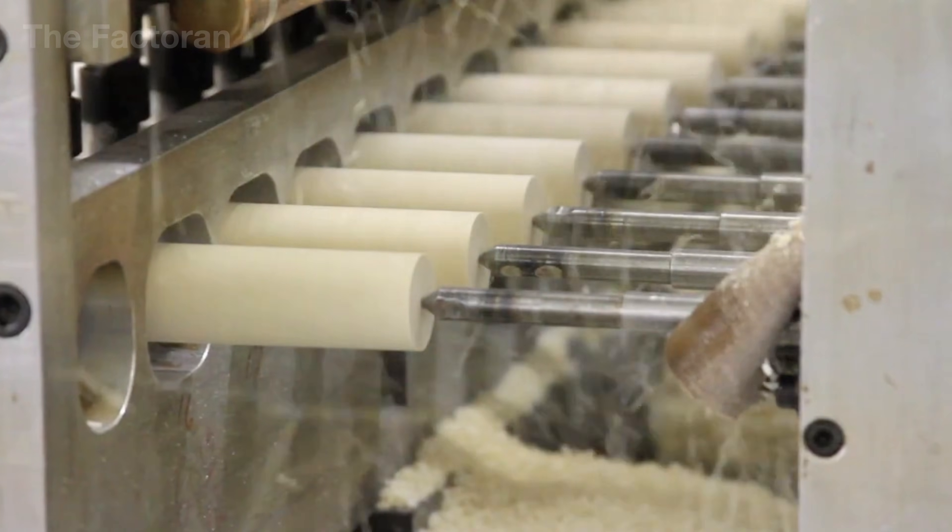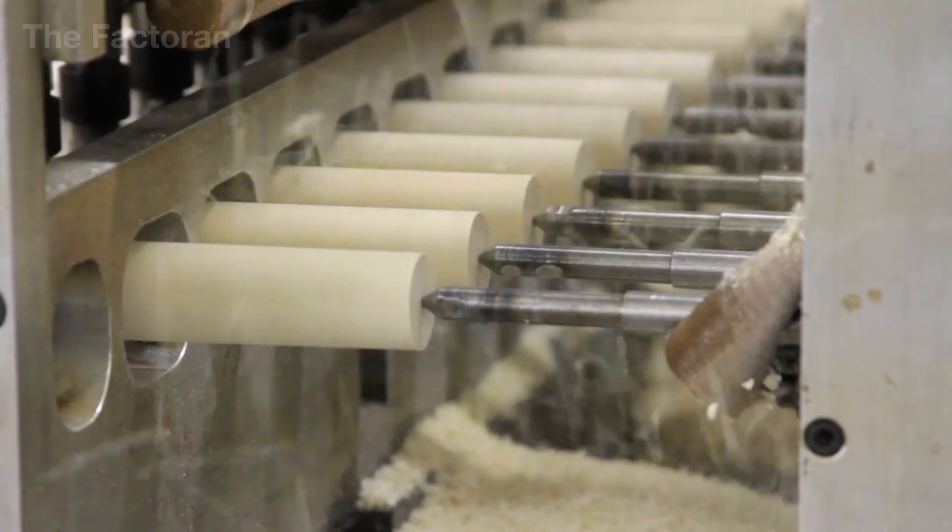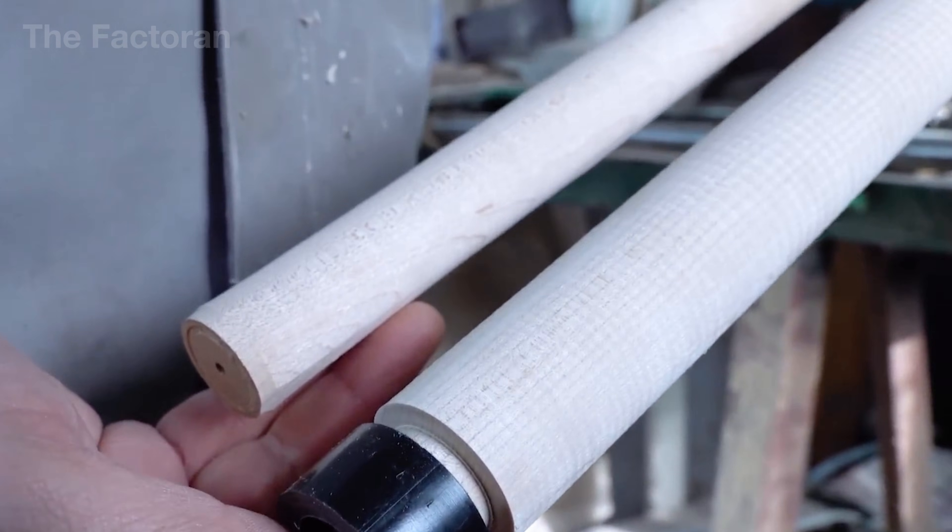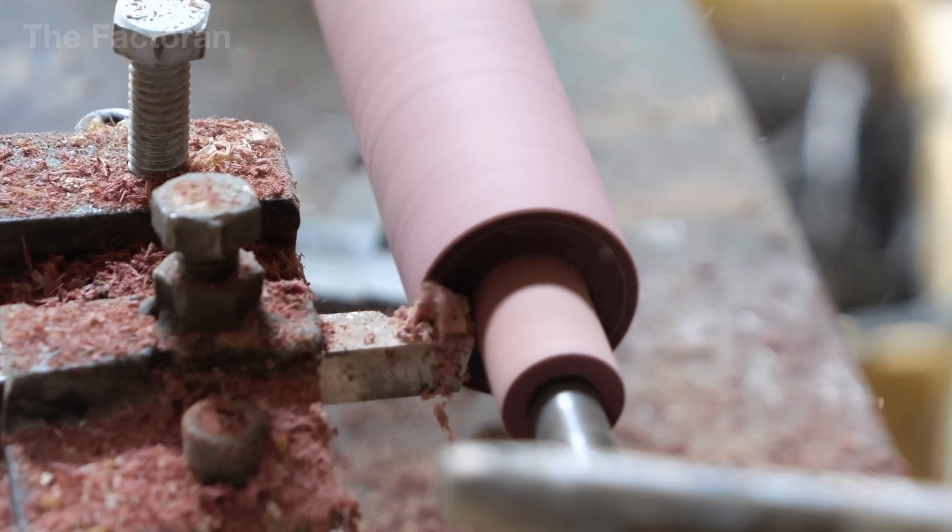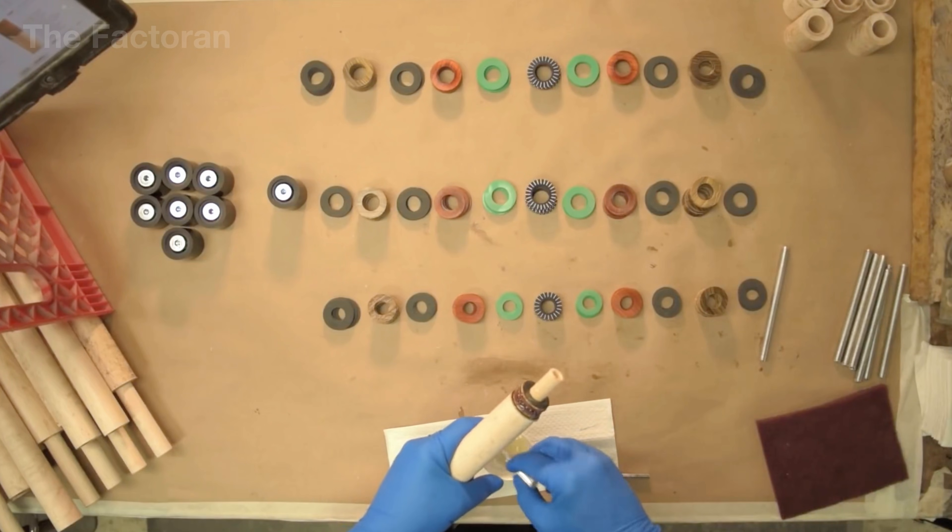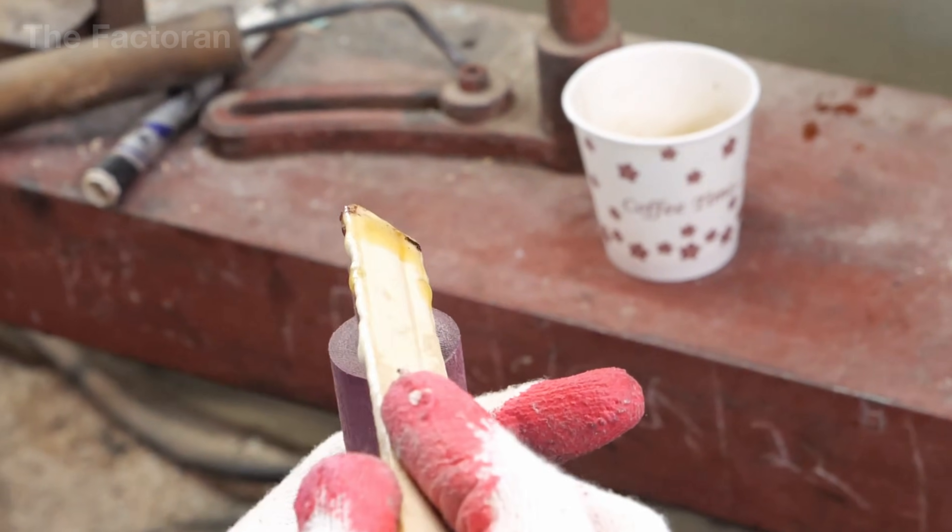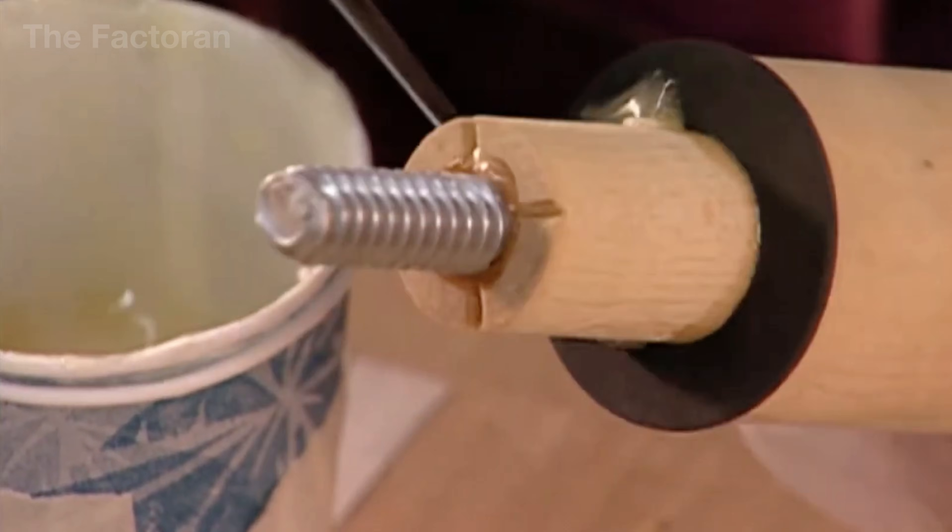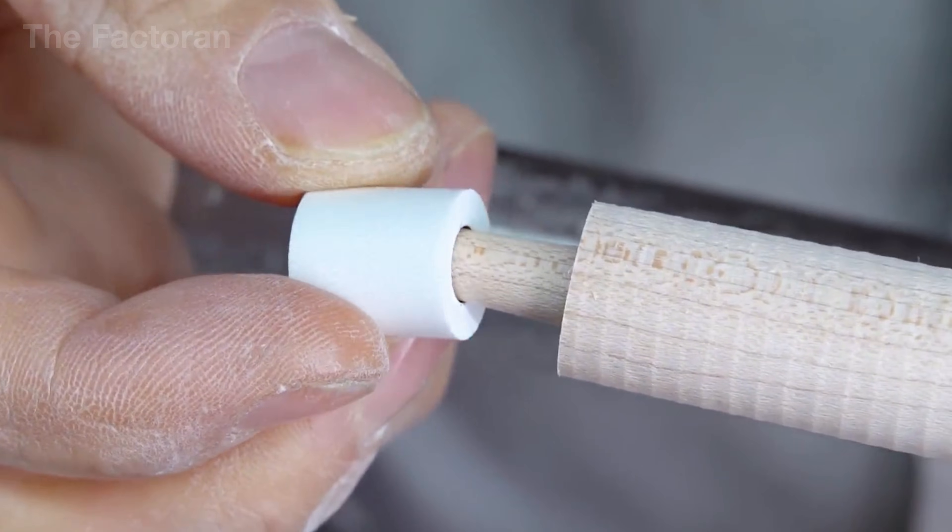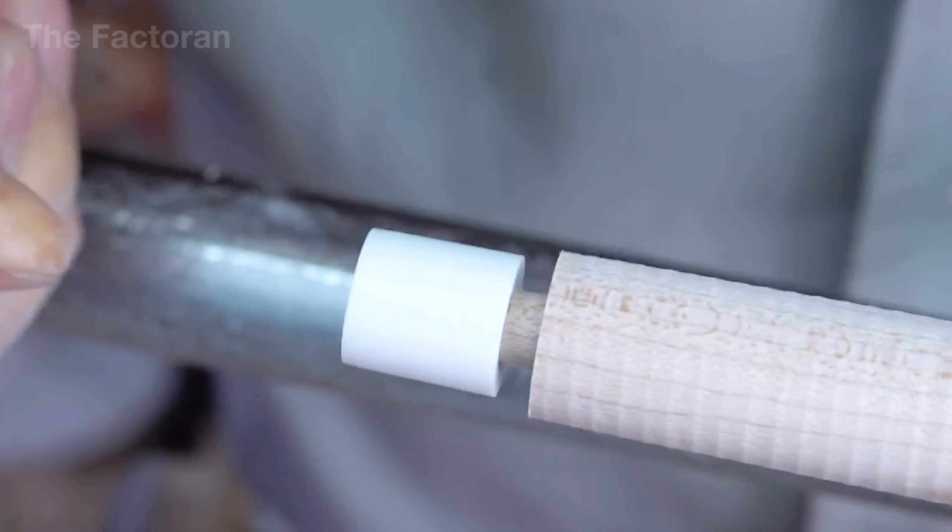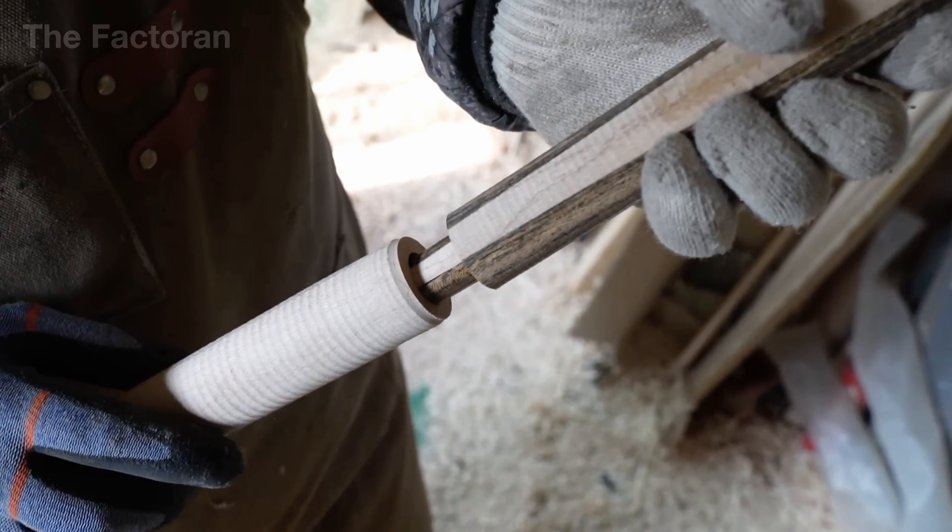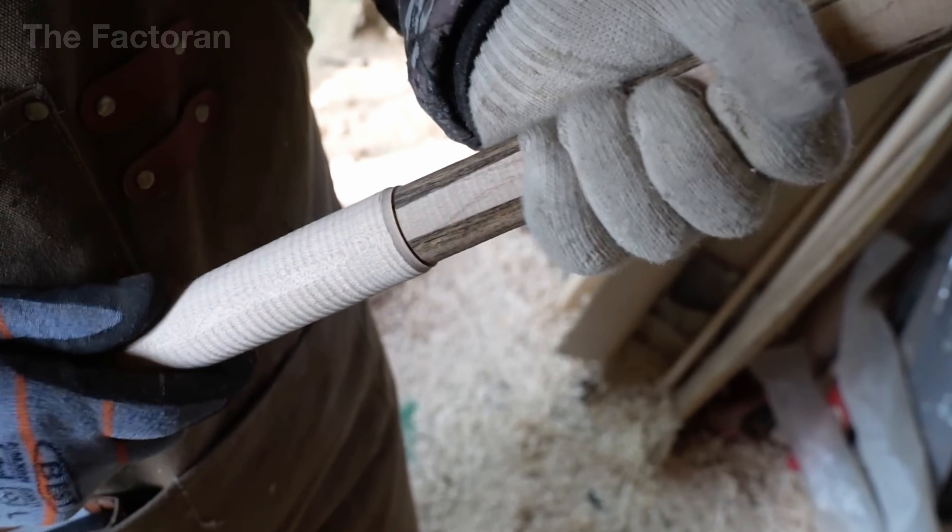When all three components of the tricore structure have been fully machined, the cue butt enters the assembly stage. First, the craftsman arranges the decorative rings in their predetermined order. For the sleeve section, each ring is carefully slid onto the tenon one by one, and a layer of specialized adhesive is applied between every ring. After that, the outer sleeve is bonded permanently in place.